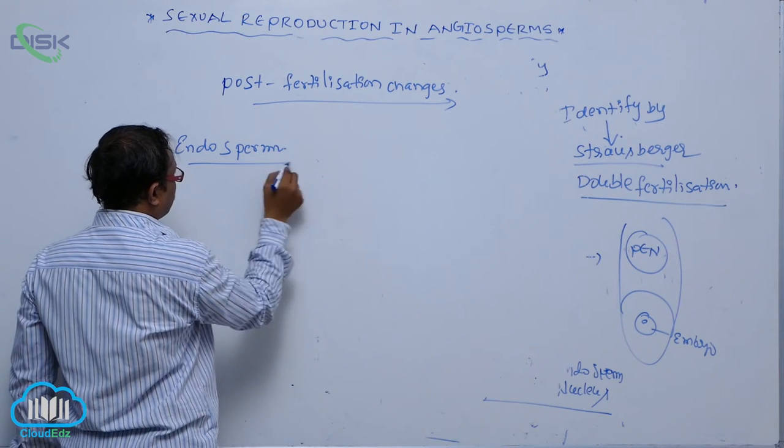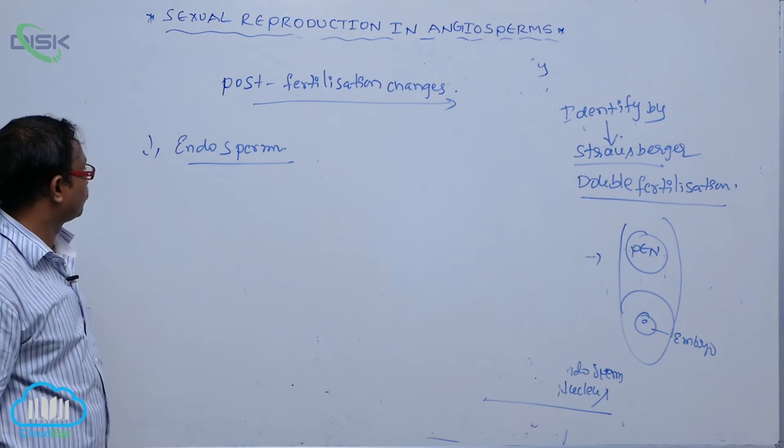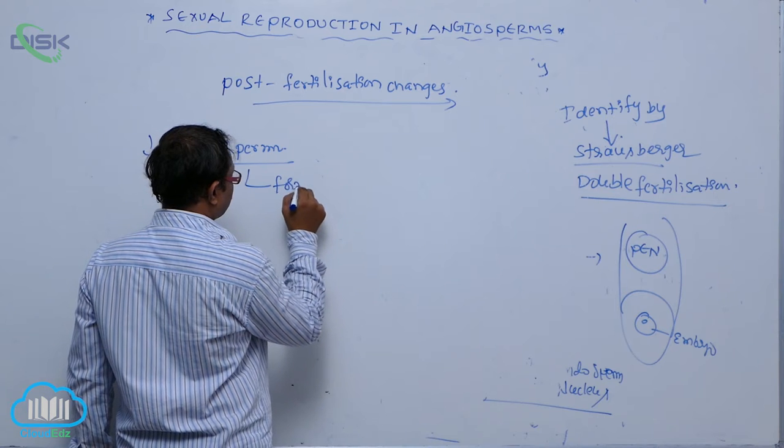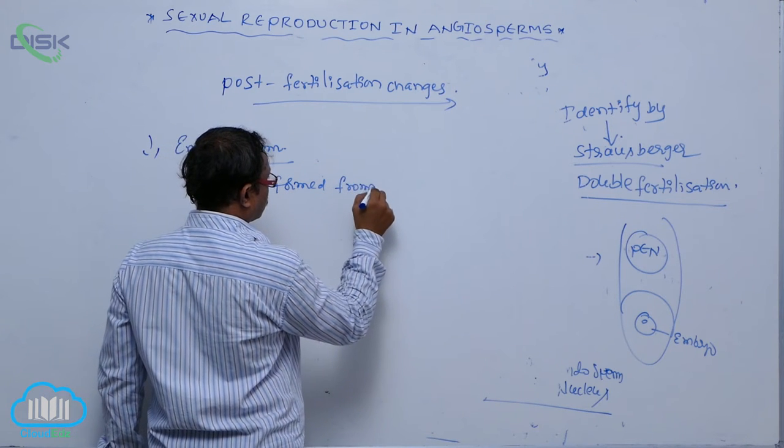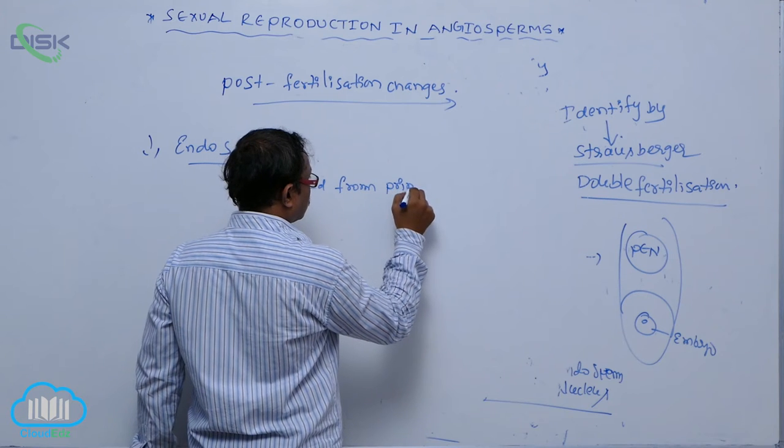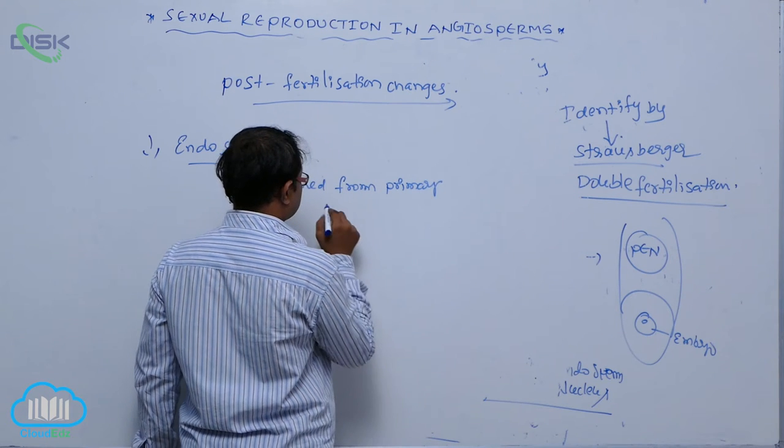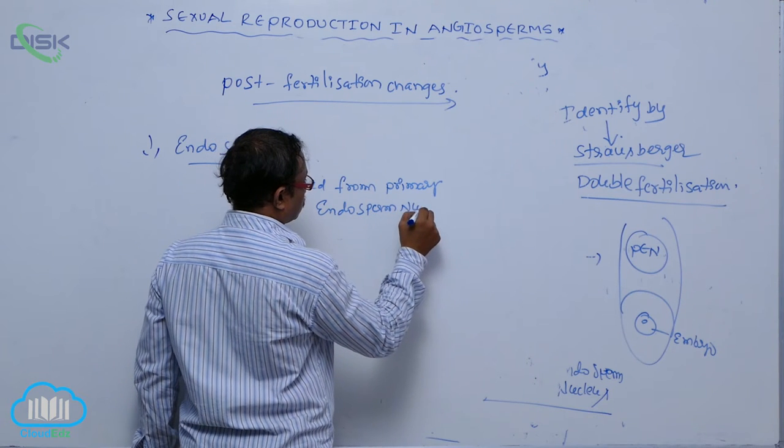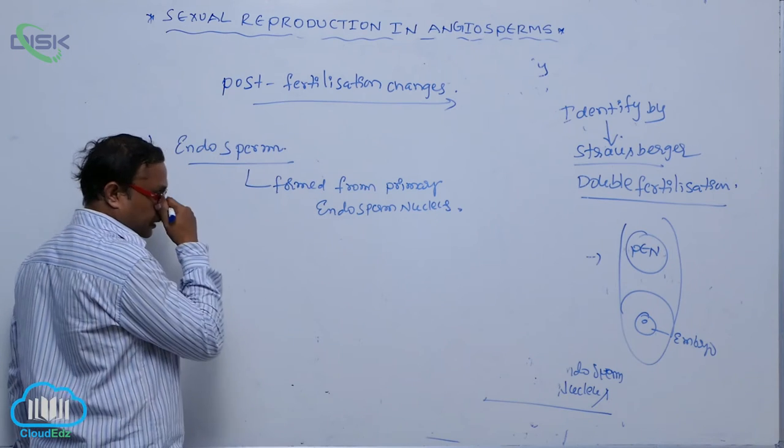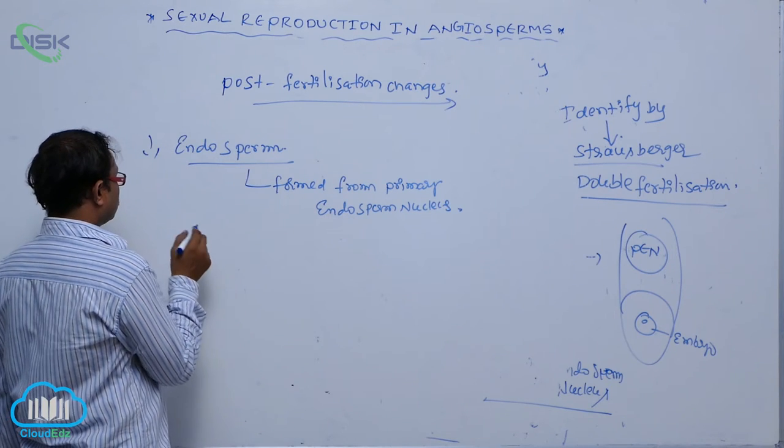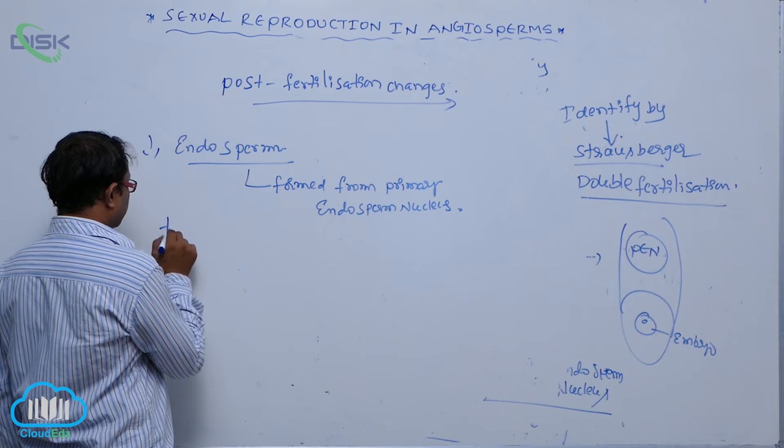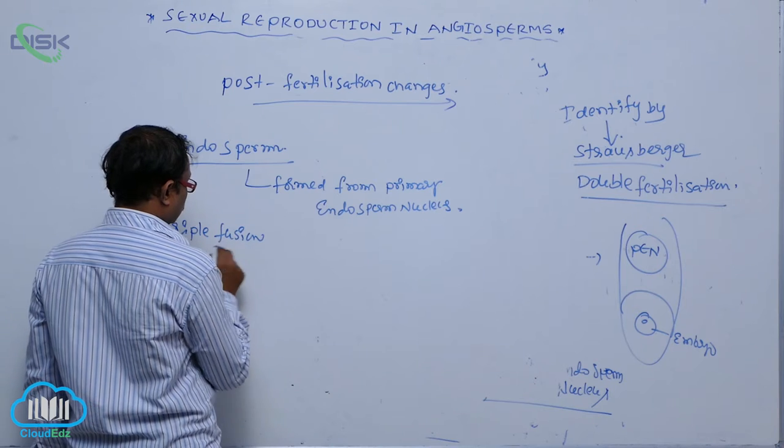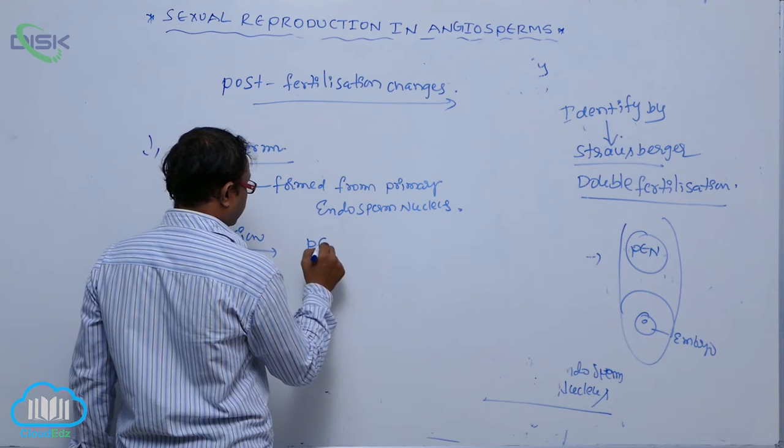first one is the endosperm. Endosperm forms from the primary endosperm nucleus. By the process of fertilization, PEN is formed.